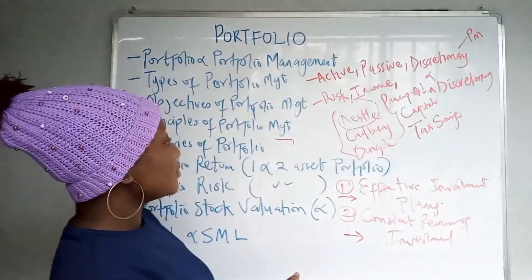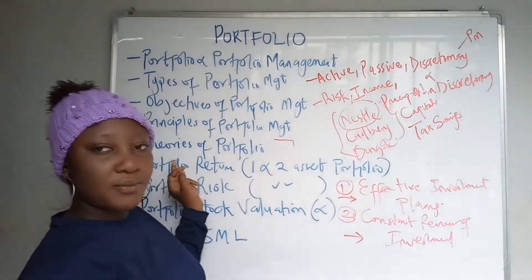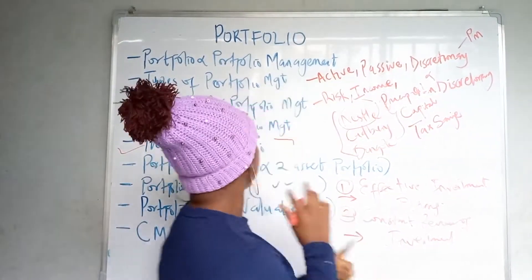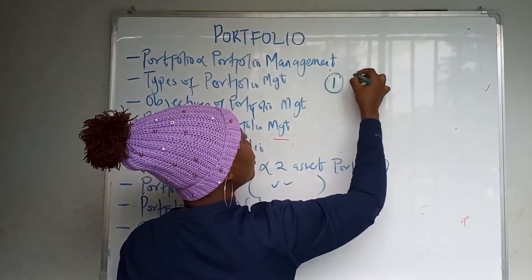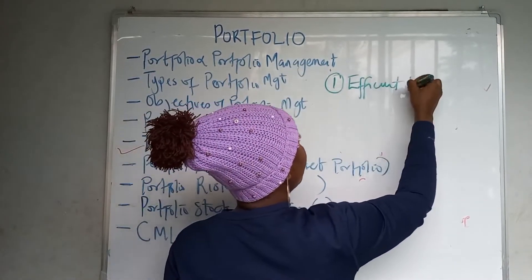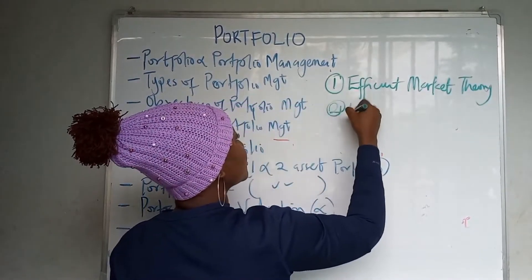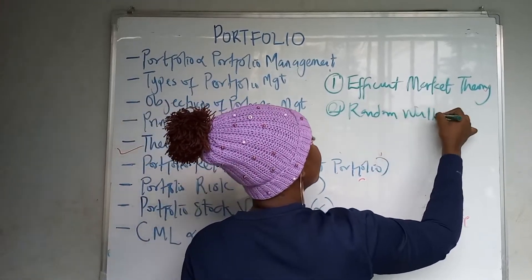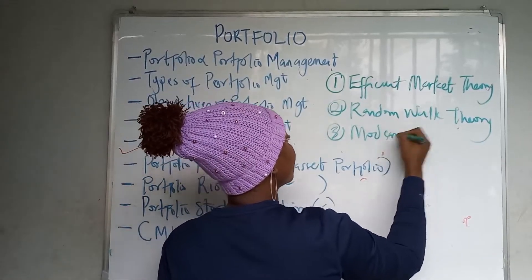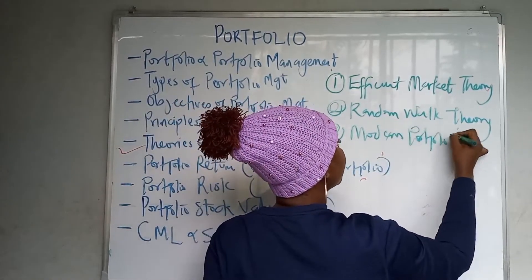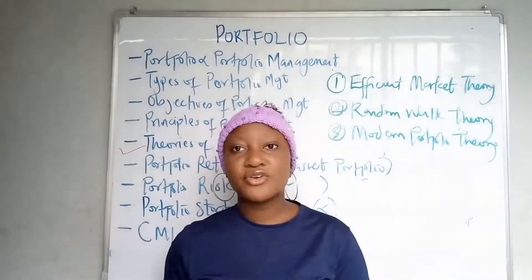Next, we'll talk about theories of portfolio — this topic has been examined before, notably in November 2014. The three portfolio theories are: first, the efficient market theory; second, the random walk theory; and third, the modern portfolio theory. You should write these down.